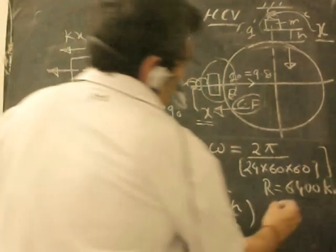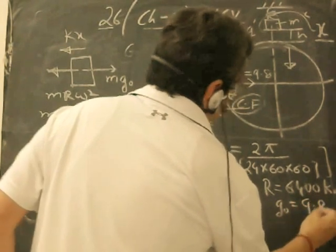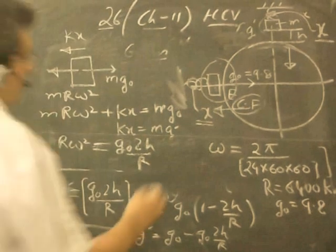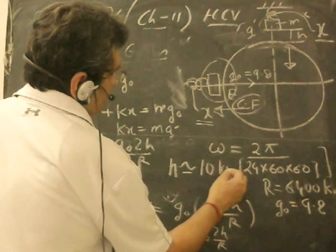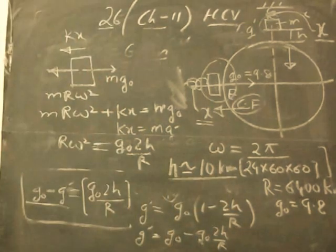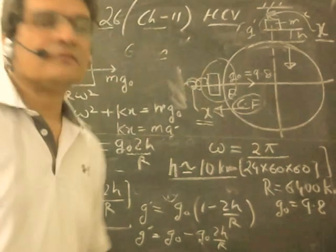We know the value of g₀ is 9.8. We place the values here and we get h as approximately 10 kilometers. So this is the answer, and that solves the problem. Thank you.